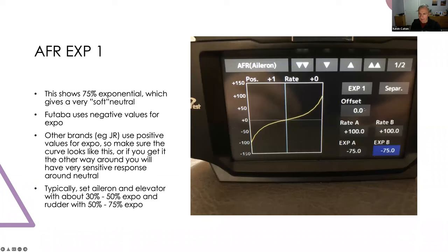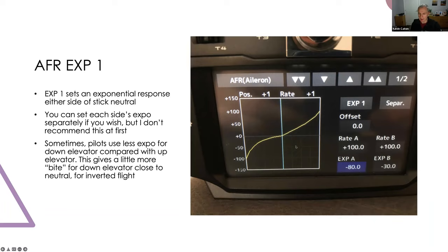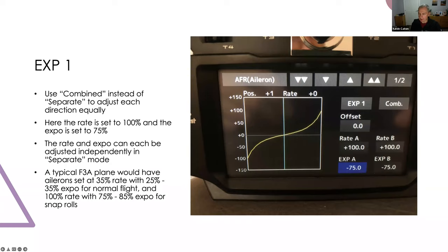A word on conventions: for Futaba radios you put a negative value in to get the exponential shape; JR uses a positive value. Don't make the mistake of selecting a logarithmic response, which would be extremely sensitive around neutral and flatten off at the extremes - I can't think of any circumstance where you'd want that. Typical numbers: around 30-50 percent exponential on aileron and elevator, a little bit more on rudder because for aerobatics you often have quite a large rudder throw, so it just softens the neutral.